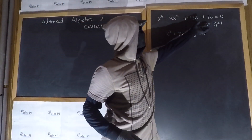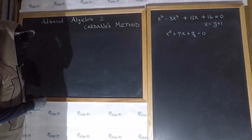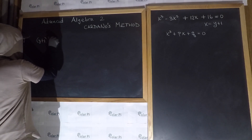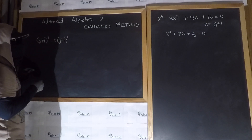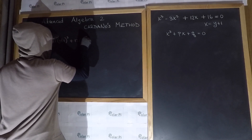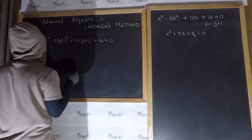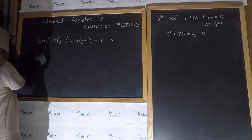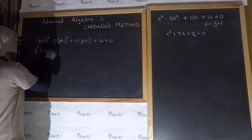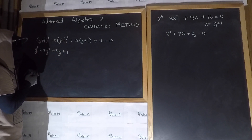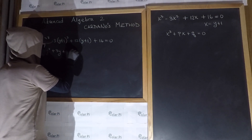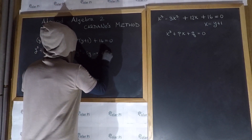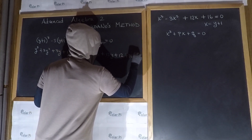Now, using this substitution, let's depress this cubic and write it in this form. So that means x³ is (y+1)³, and then we have minus 3 times (y+1)², that's minus 3x². Plus 12 times... We should know that (y+1)³ is y³ + 3y² + 3y + 1. And then (y+1)² is y² + 2y + 1, but we have a minus 3 in front of it, so minus 3y² - 6y - 3. And then plus 12y + 12 + 16 equals 0.